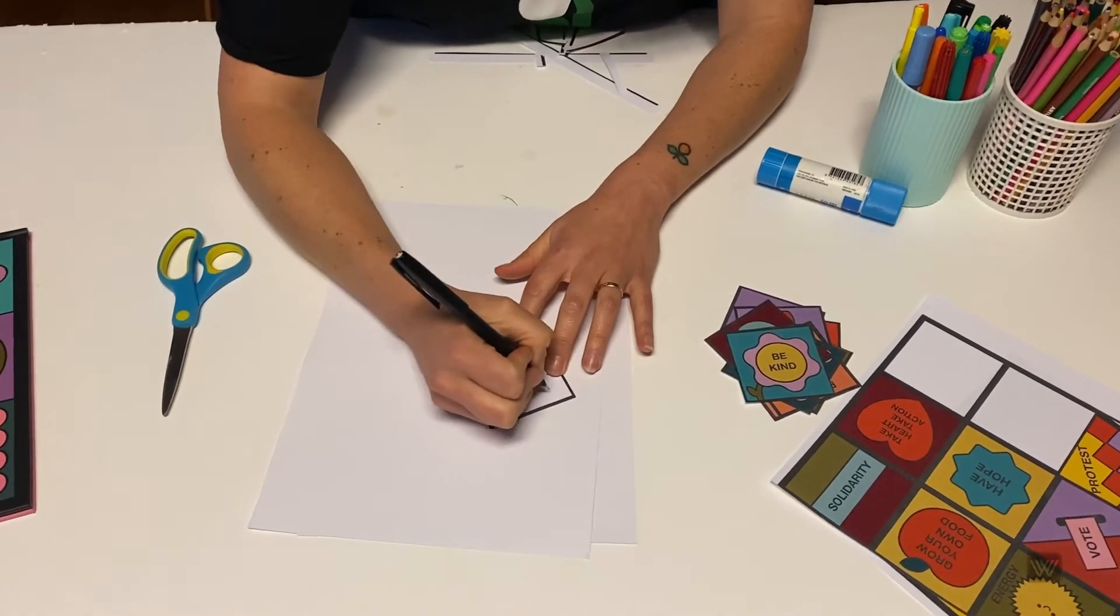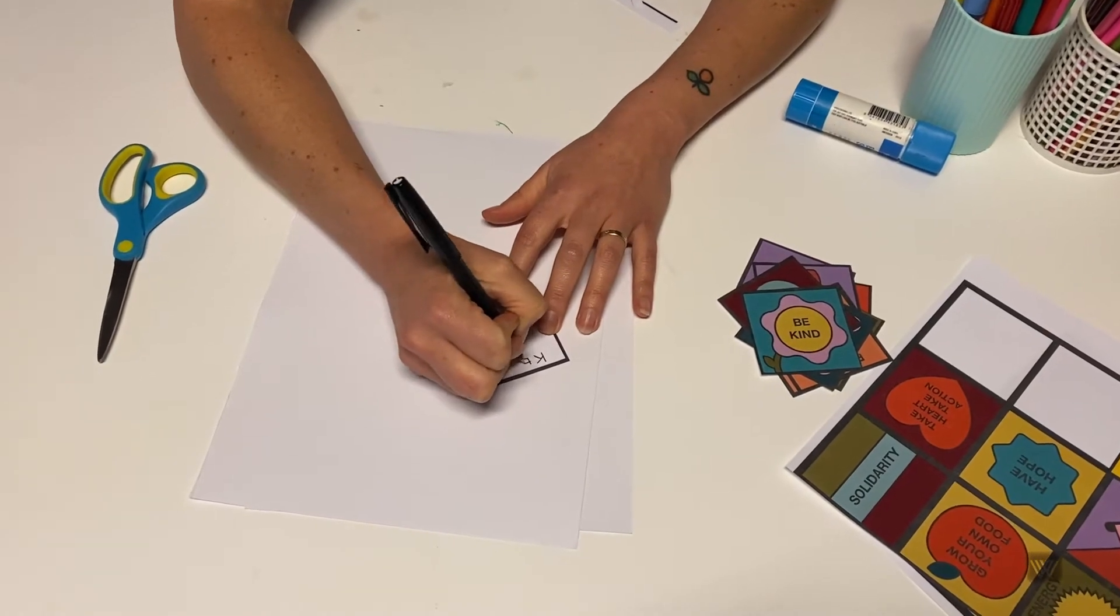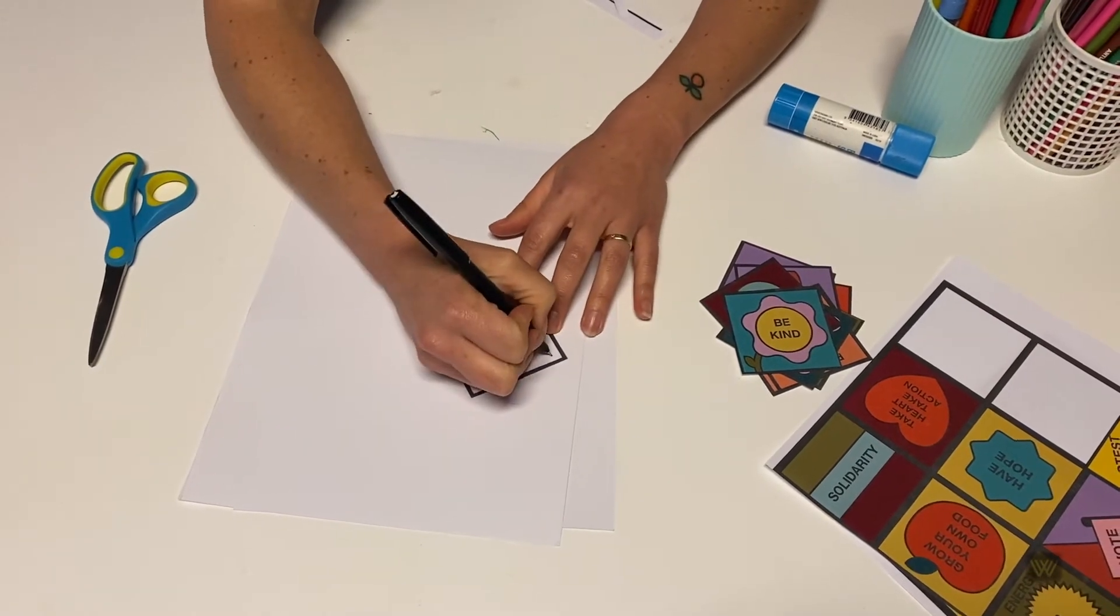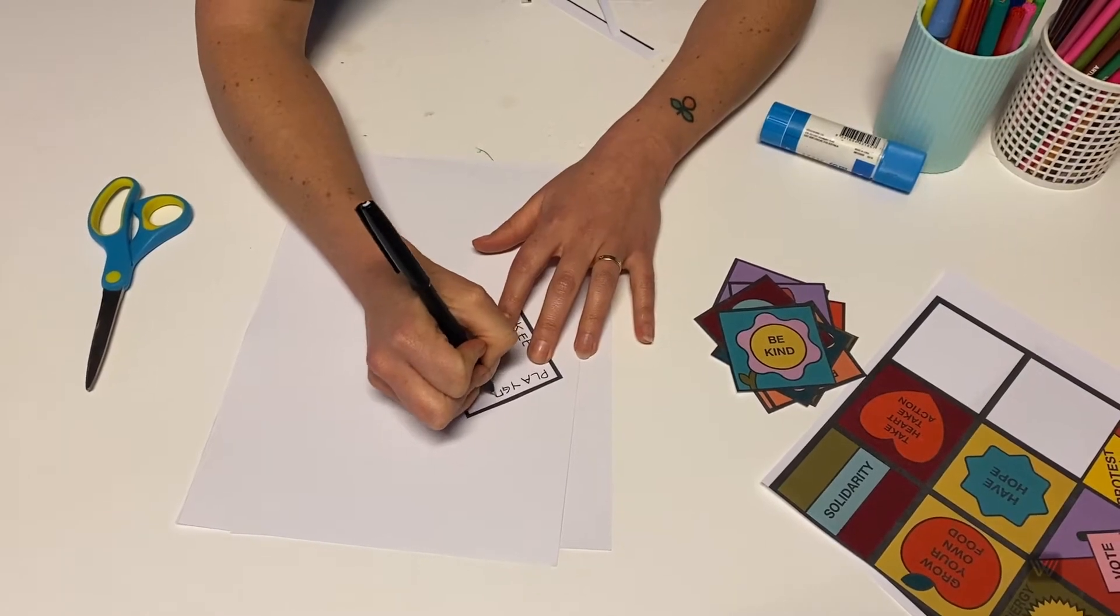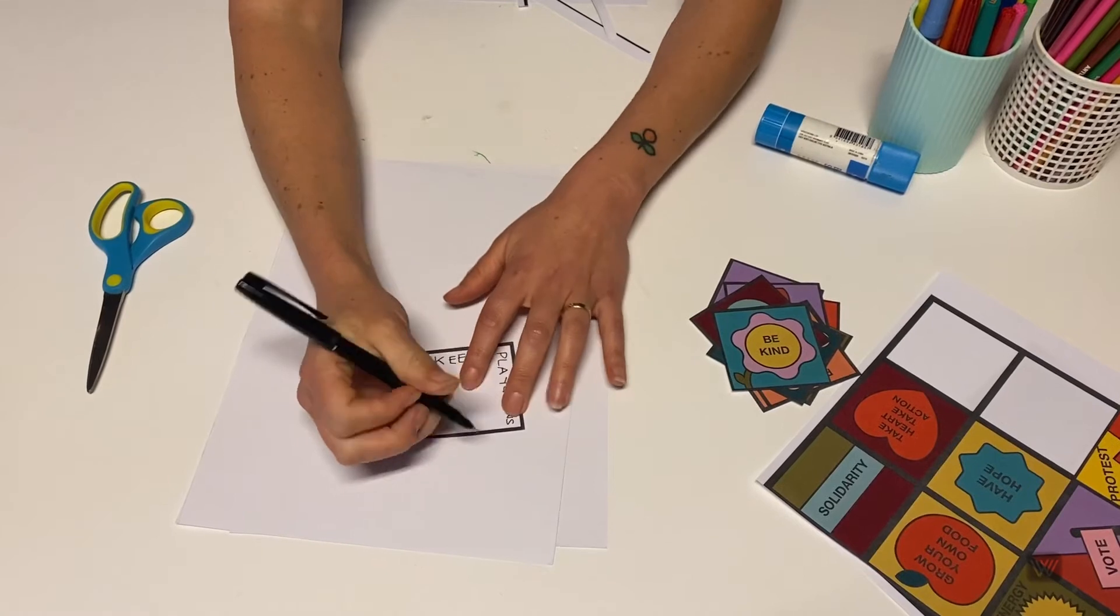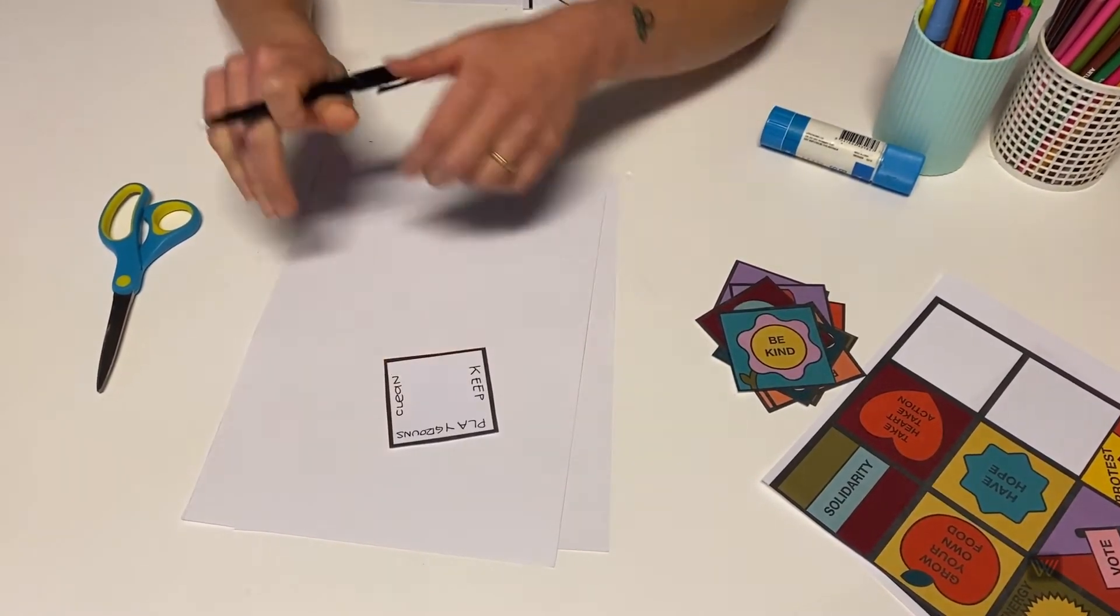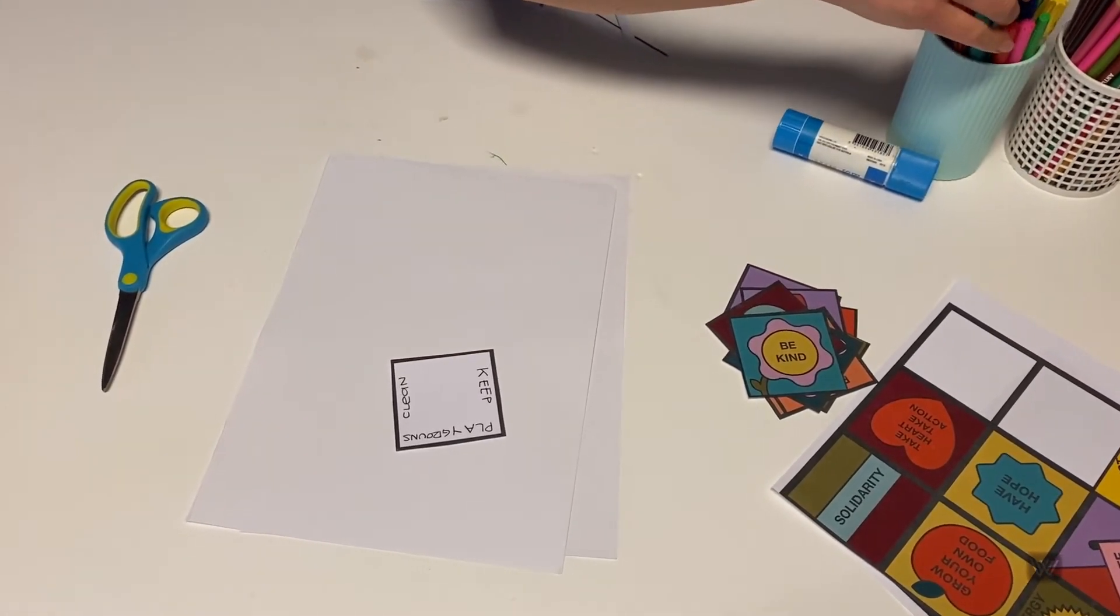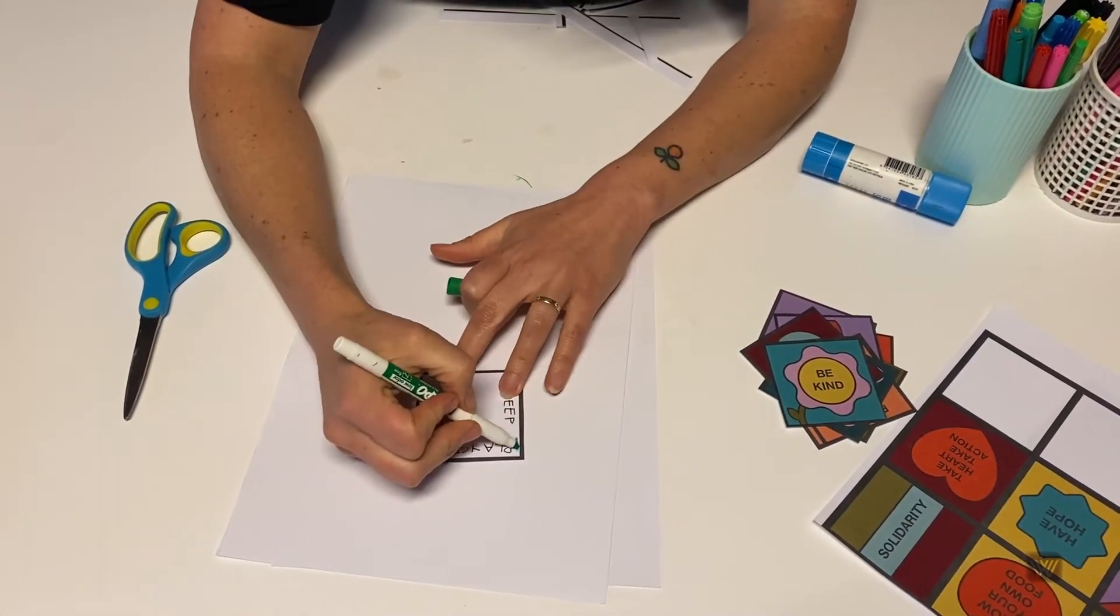It'll be, let's do keep playgrounds clean. And then I'm going to draw a picture of a playground. Color it in green.